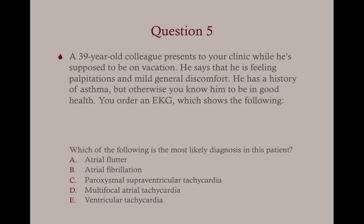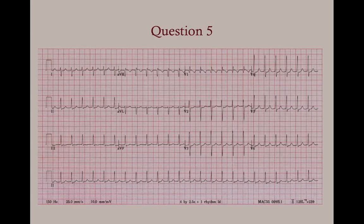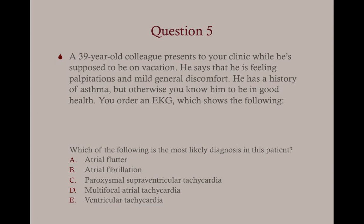Question five: A 39-year-old colleague presents to your clinic feeling palpitations and mild general discomfort. He has a history of asthma but is otherwise in good health. You order an EKG which shows a certain pattern. He's stable with some chest pain and palpitations. What's the most likely diagnosis? A, atrial flutter; B, atrial fibrillation; C, paroxysmal supraventricular tachycardia; D, multifocal atrial tachycardia; or E, ventricular tachycardia? The answer is C, paroxysmal supraventricular tachycardia.